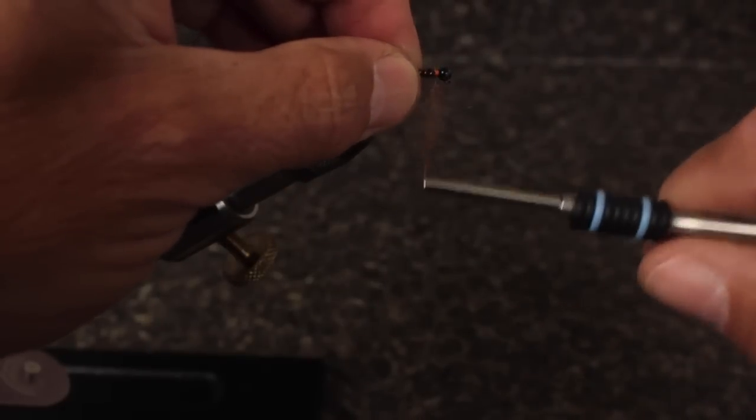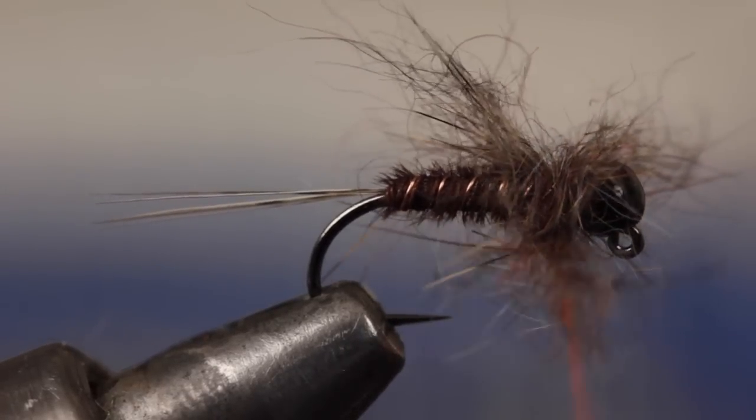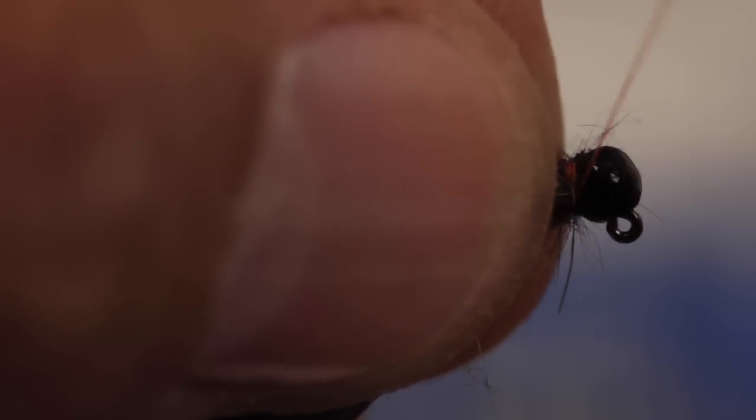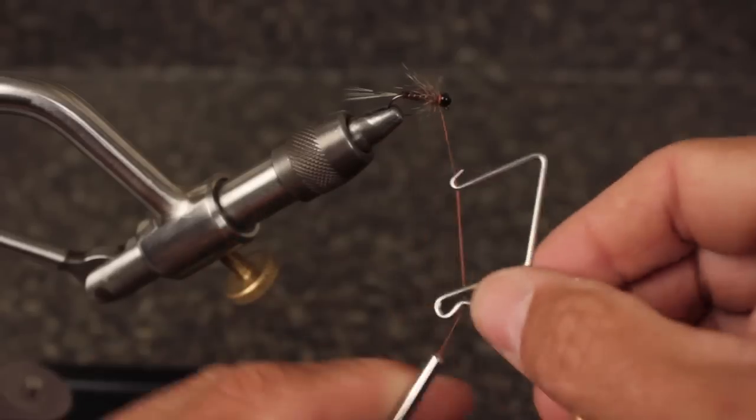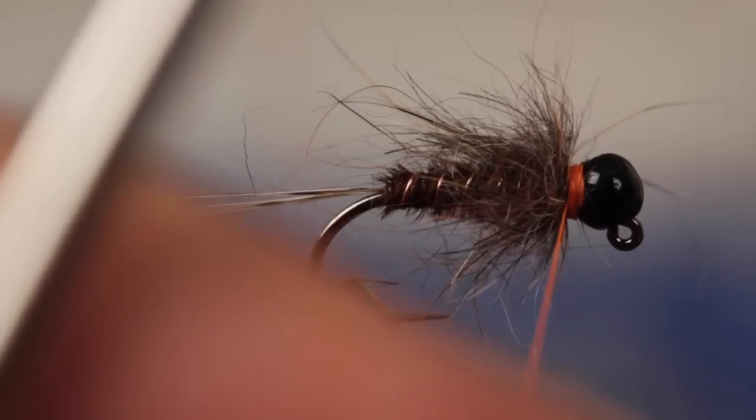Once this is done, begin making wraps to cover the thread between the body and the bead. Occasionally pull the fibers back as you wrap to get them pointed slightly rearward. Pull out any loose fibers and then begin building a short hotspot thread collar which will be enhanced with a five or six turn whip finish.